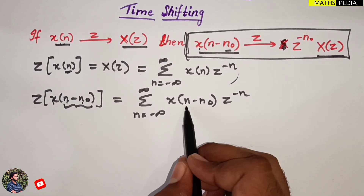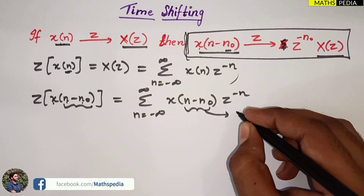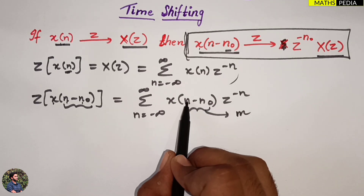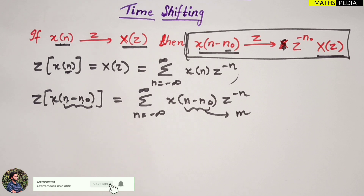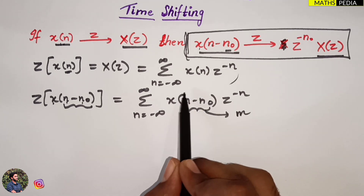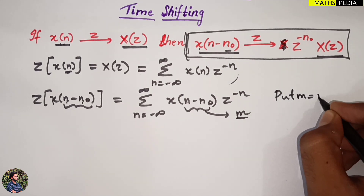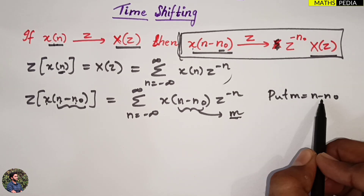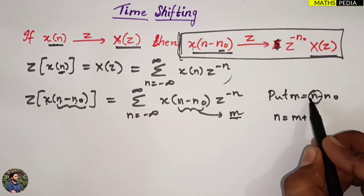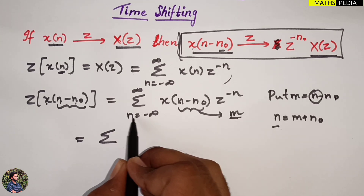Now, n minus n-naught — I will substitute with some variable. I will take m. So, put m equal to n minus n-naught. This is the substitution. From this, n can be written as m plus n-naught.